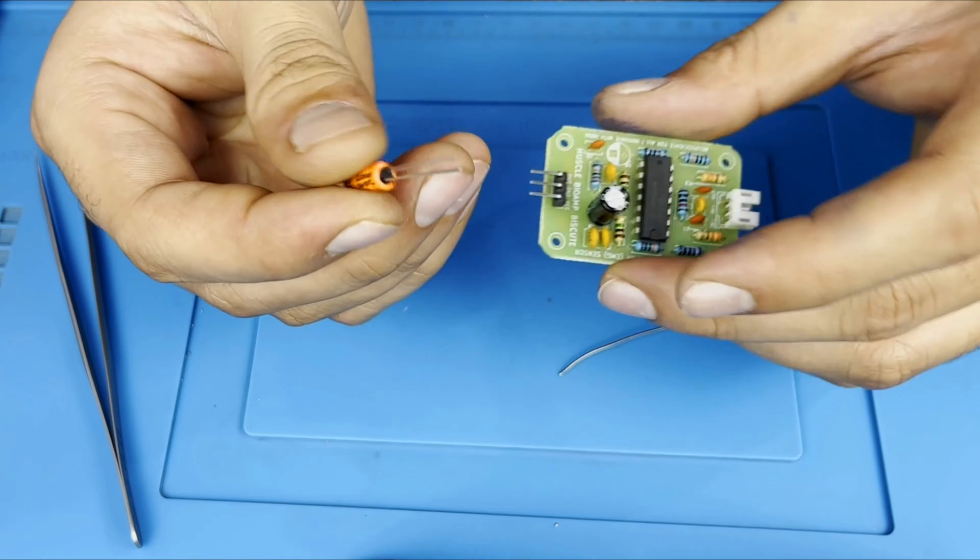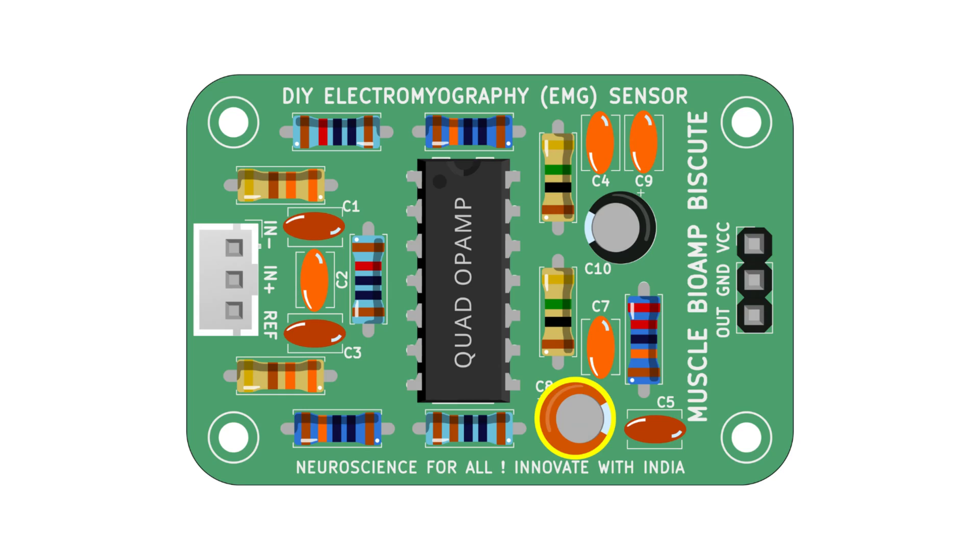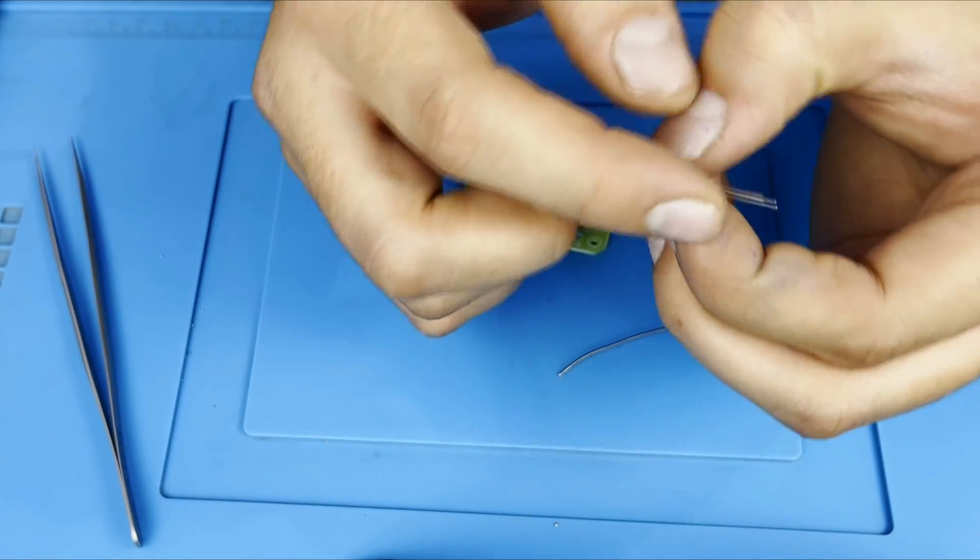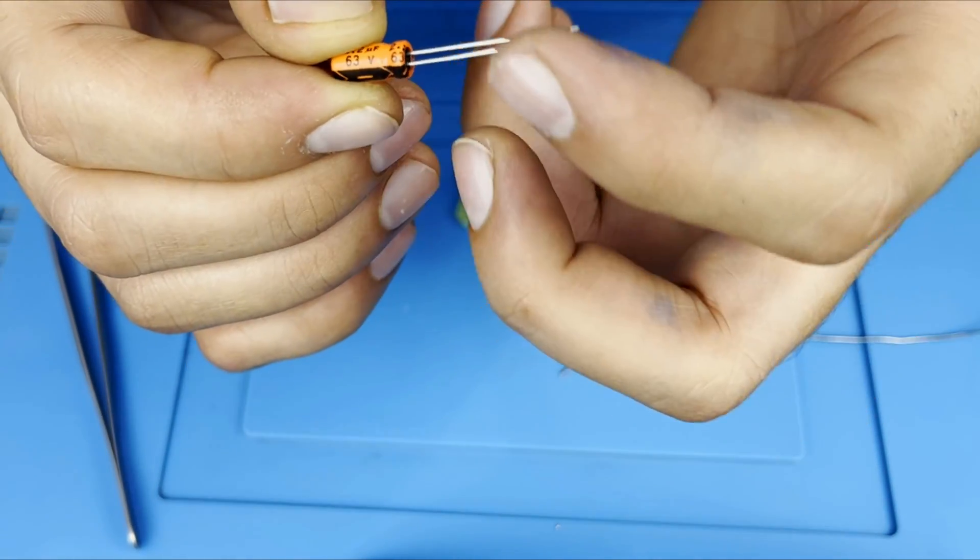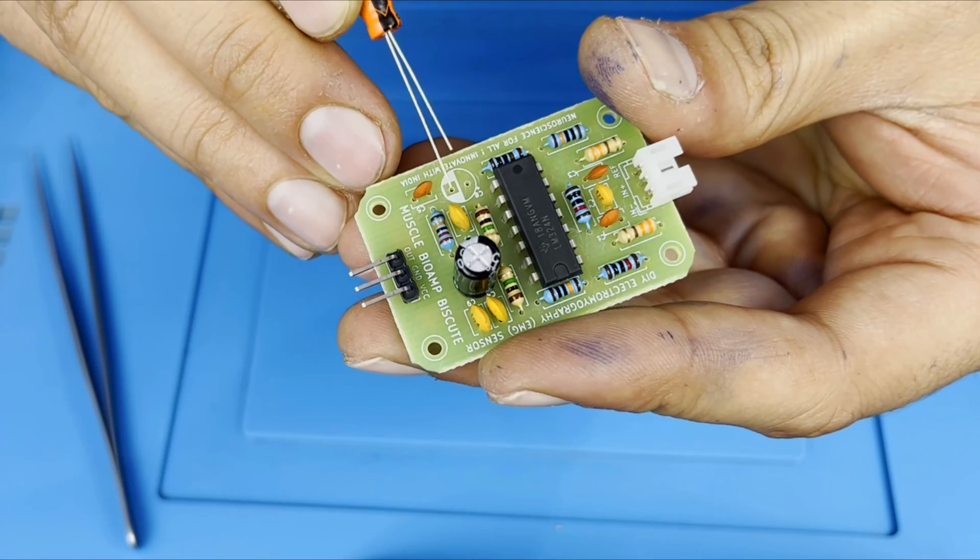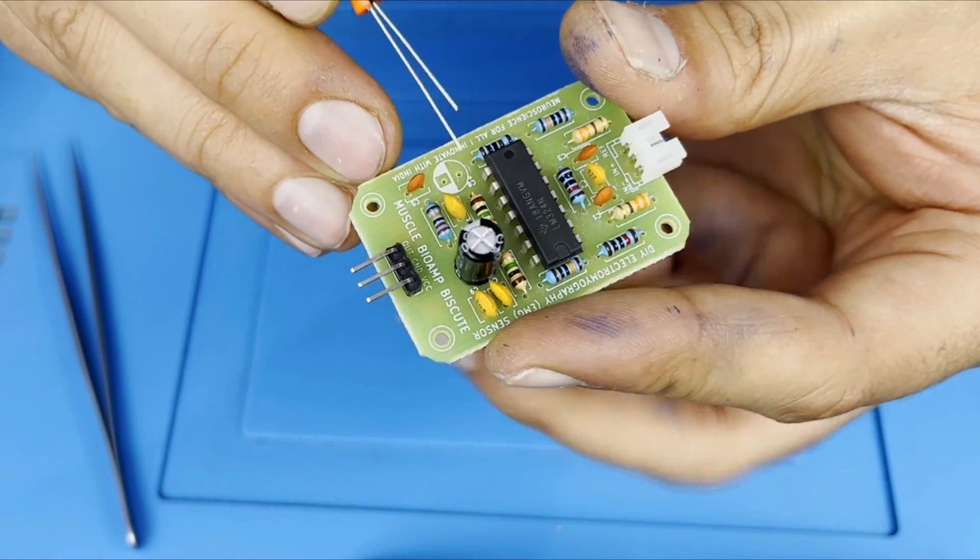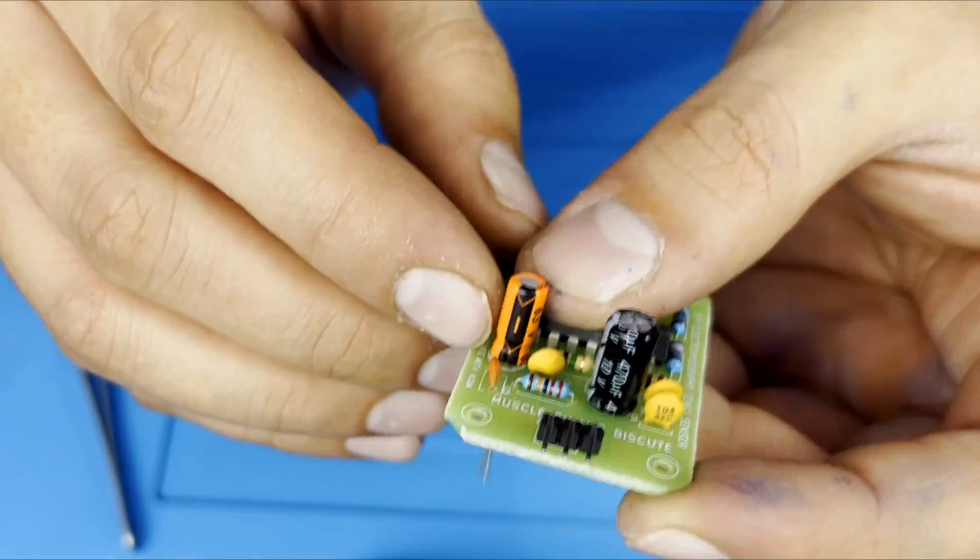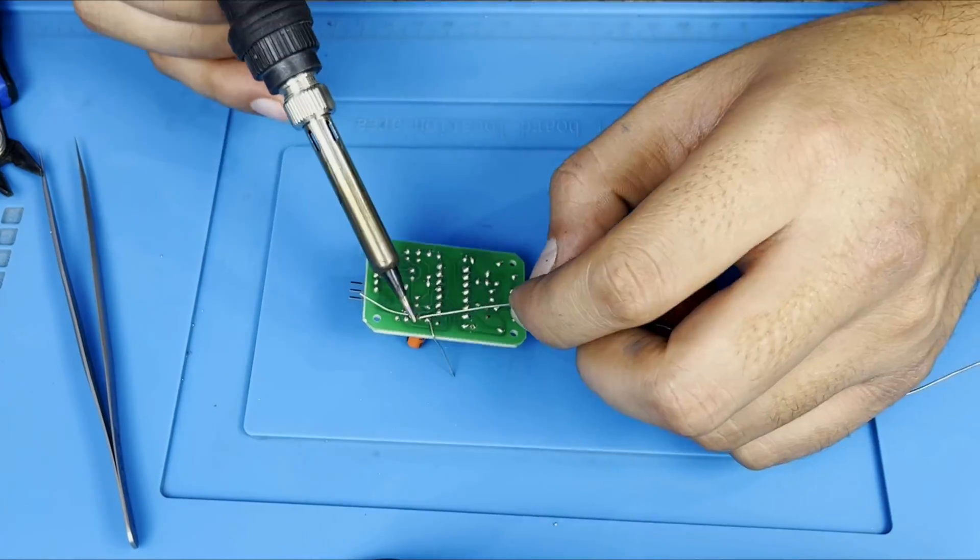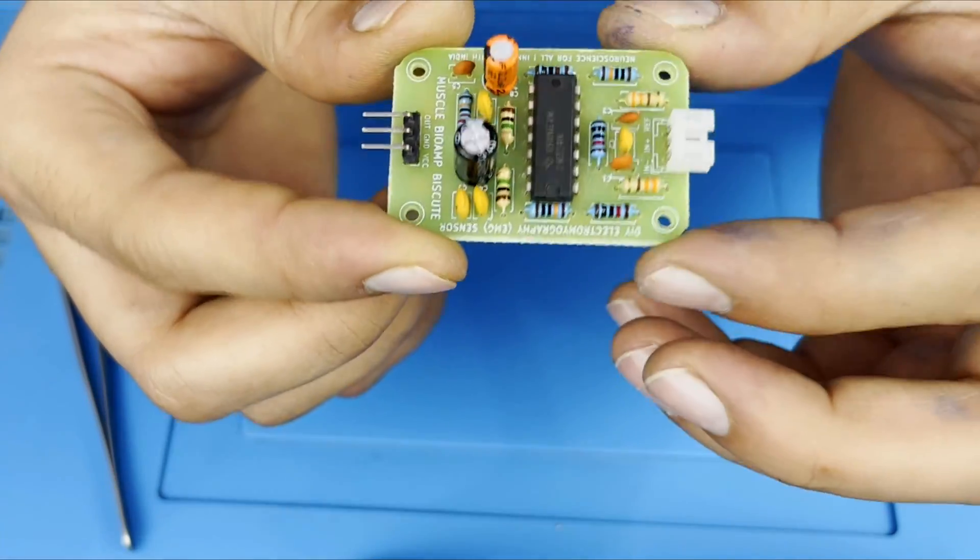This is our 2.2UF located at C8. The bigger pin will be positive, shorter will be negative. The white area is for the negative and the blank area is for the positive. So here carefully insert it and after this bend the pins and solder it.